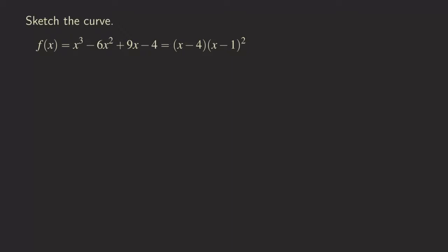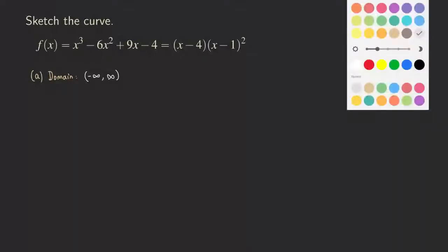So the first thing is we are going to find the domain. Because this is a polynomial function, we know that the domain is going to be all real numbers. In interval notation, it will be from negative infinity to infinity. So that part is done.